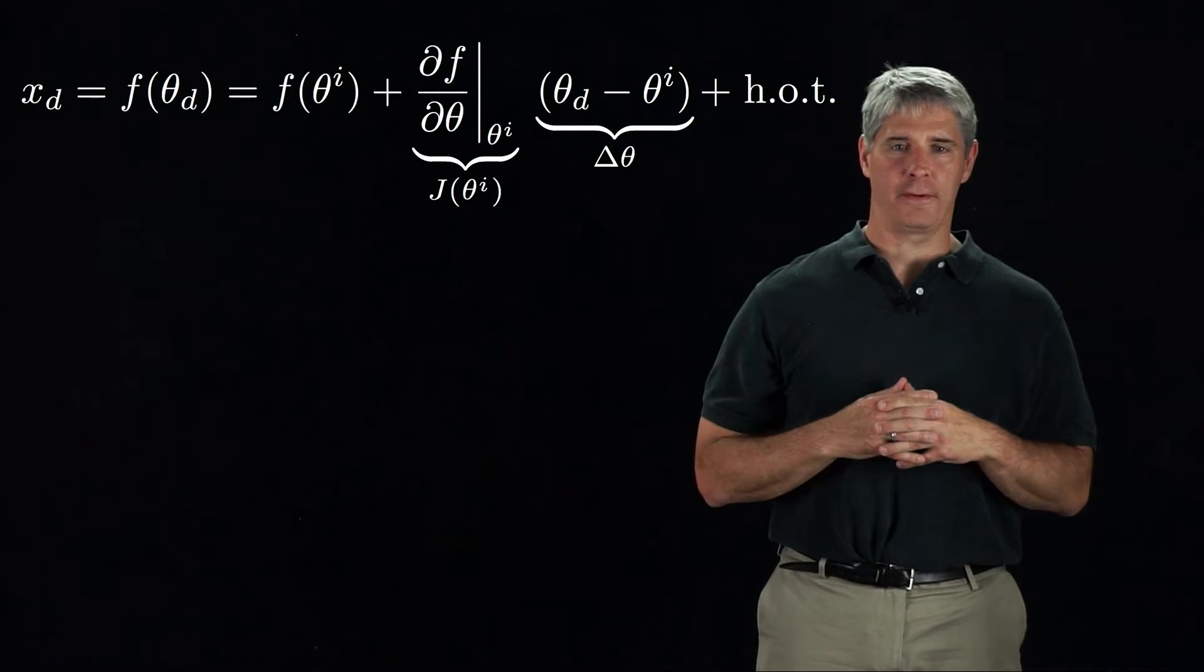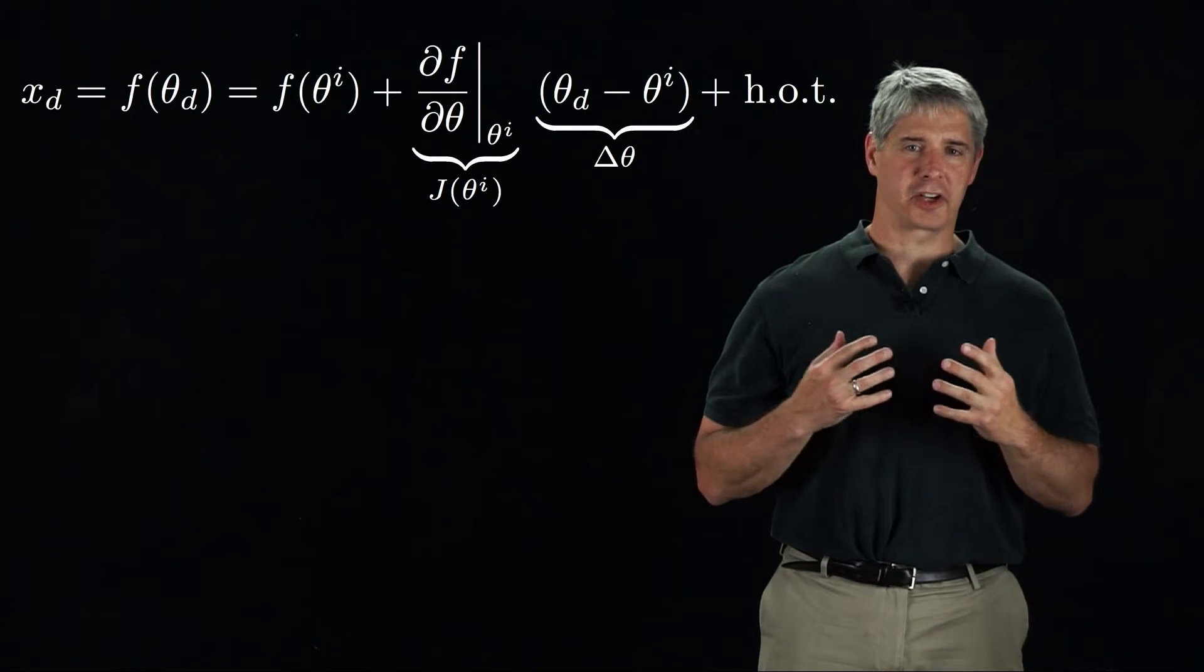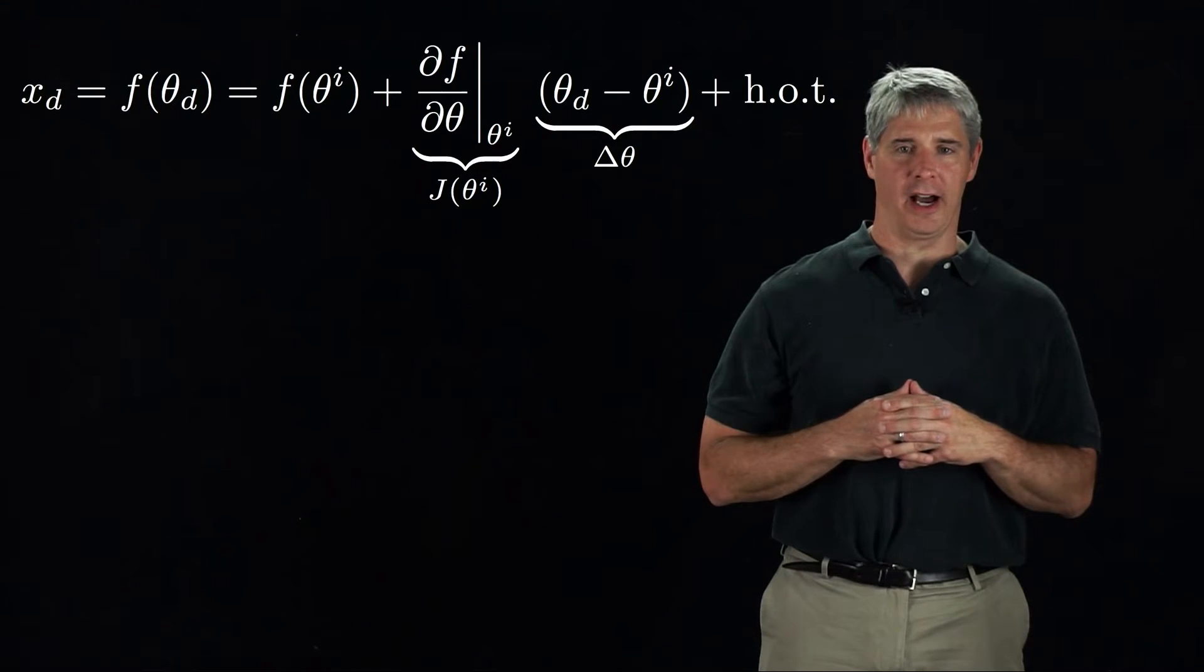f of theta-d is equal to f of theta-i, where theta-i is the current guess at the solution, plus the Jacobian of f evaluated at theta-i times delta-theta, plus higher-order terms.